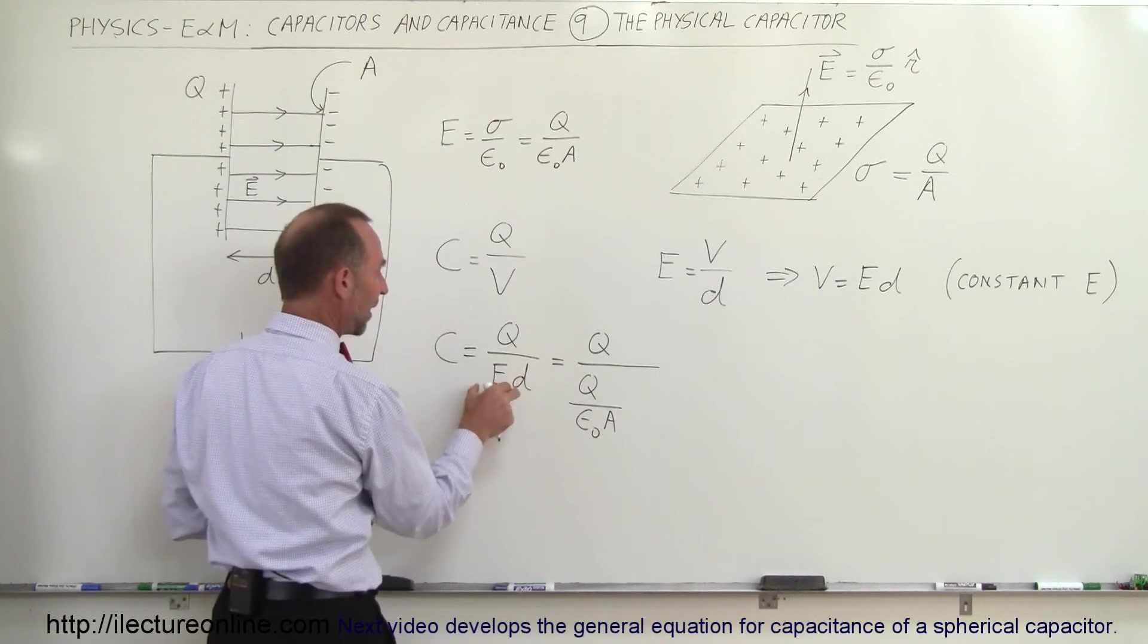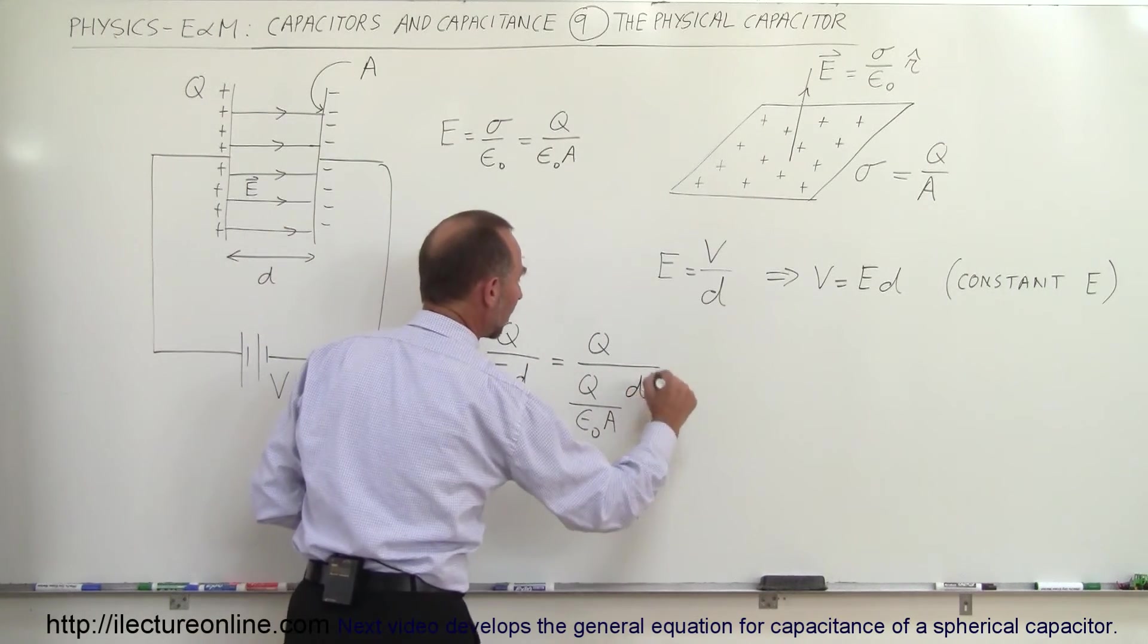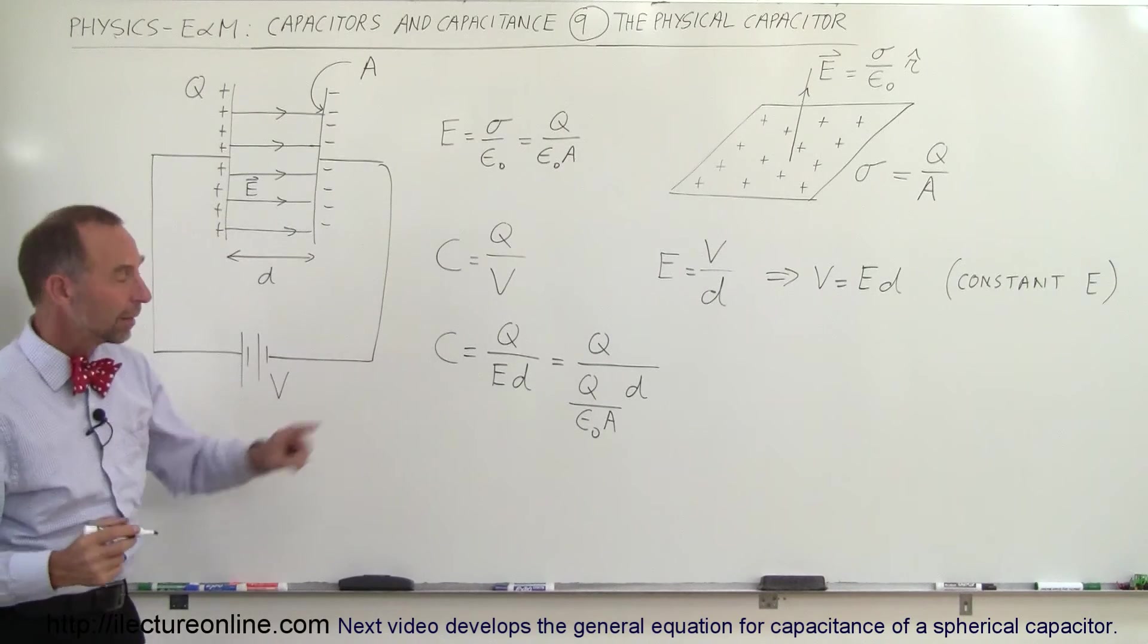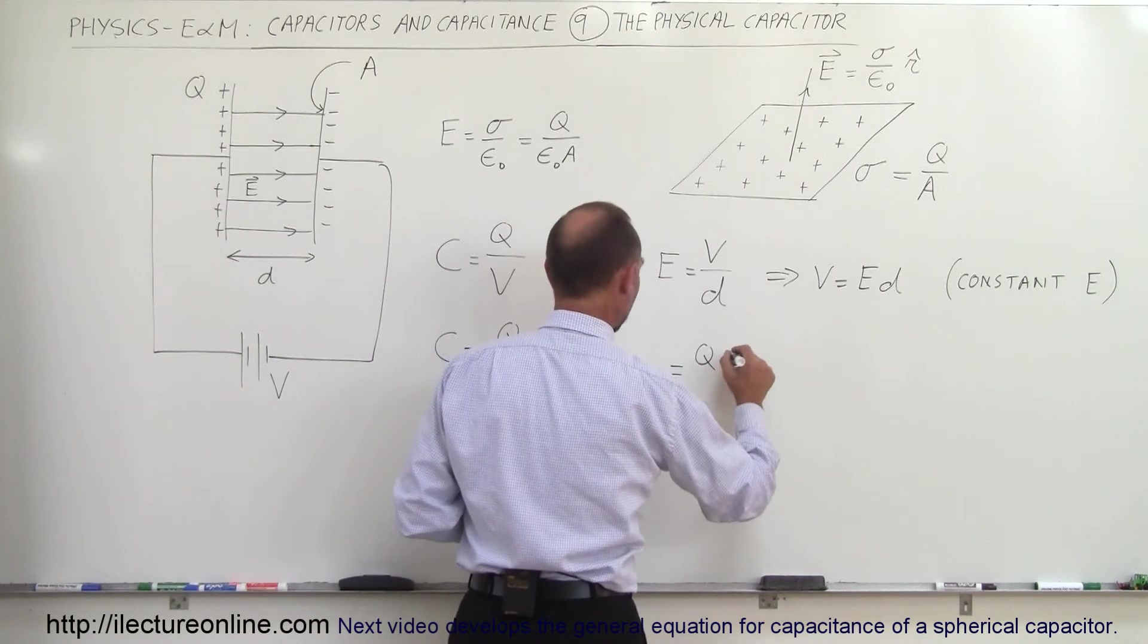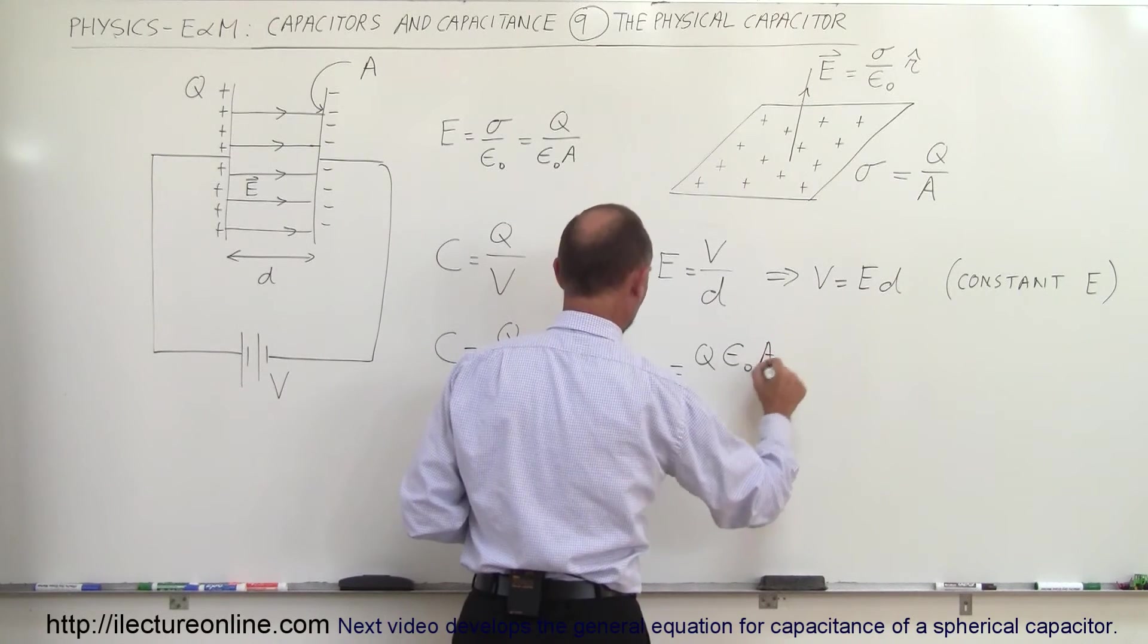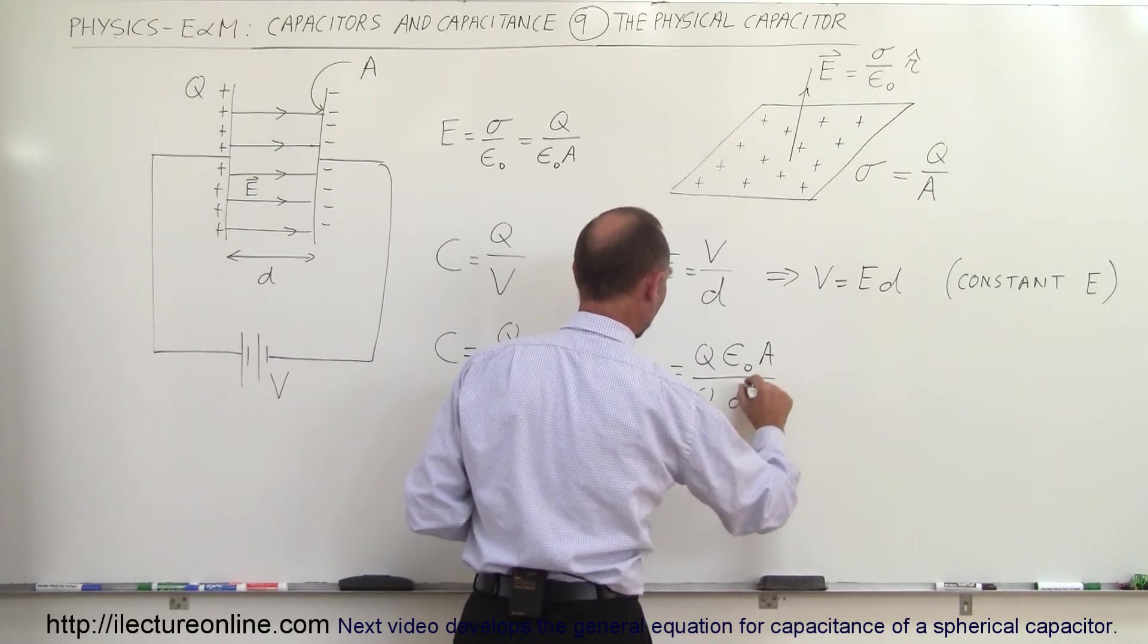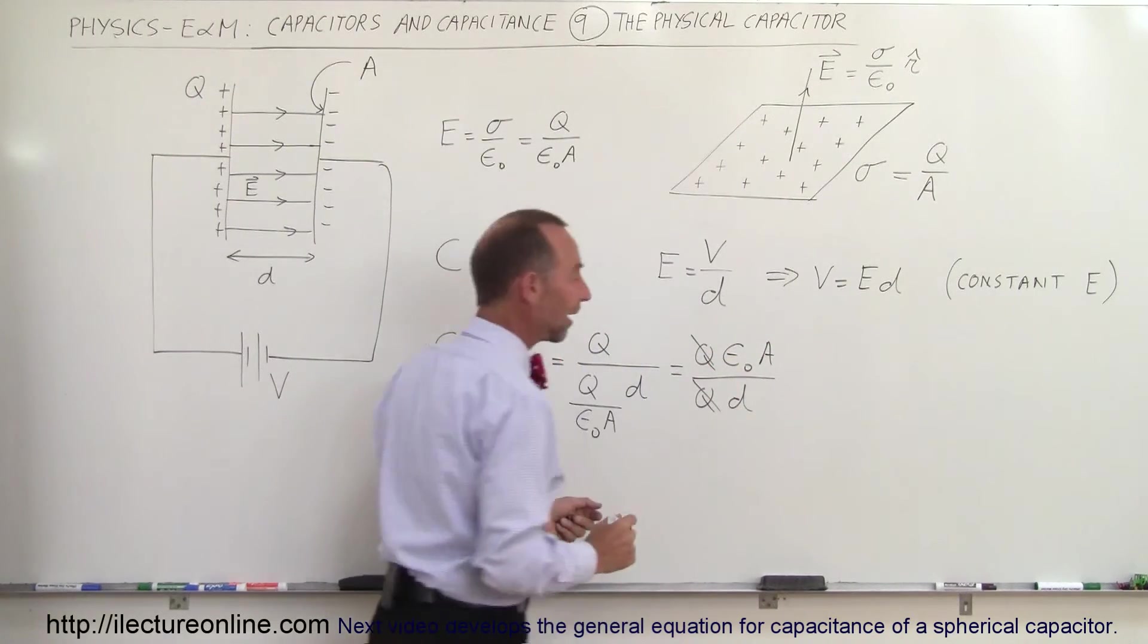So now we have Q, we have A replaced. We still need the D over there, which is the D right there. Now let's put epsilon sub-naught times A in the numerator. So this is Q times epsilon sub-naught times the area divided by Q times D. And then the Qs cancel out.